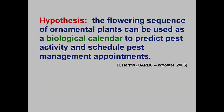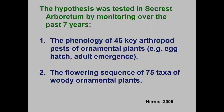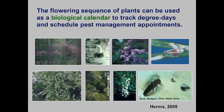Dr. Dan Herms was a tree and shrub entomologist who worked at the Ohio Agricultural Research and Development Center in Wooster, Ohio. He hypothesized that the sequence of visual plant events could be used to predict when insect and mite pest activity would occur, and once this was done, a phenological calendar could be used to schedule pest management timing. In 2005, Dr. Herms had accumulated seven years of observations on 75 plant species in the OARDC Secrest Arboretum, as well as the activities of 45 arthropod pests of ornamental plants. He concluded at that time that a phenological calendar was just as good and sometimes even better than degree day targets, and he continued collecting data until he left the university in 2017.